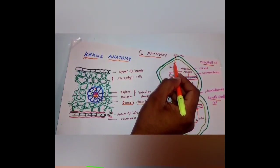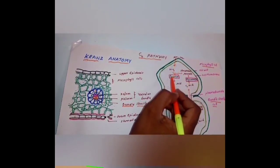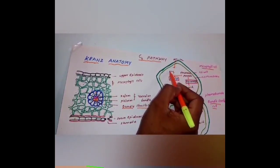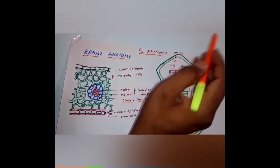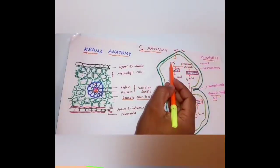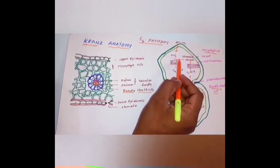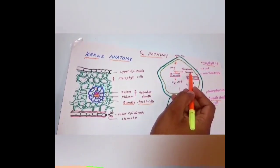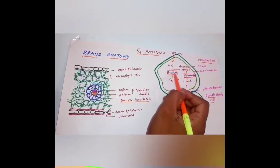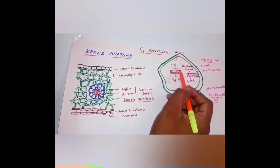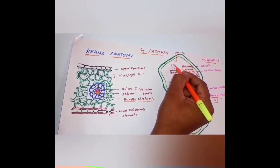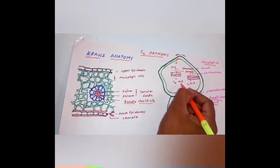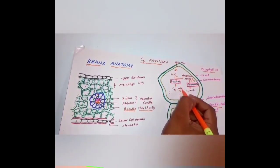Carbon dioxide is converted into bicarbonate ions. These bicarbonate ions are not taken by ribulose-1,5-bisphosphate as in C3 plants; instead, the carbon dioxide is received by phosphoenolpyruvate (PEP). Carbon dioxide in the form of bicarbonate ions reacts with phosphoenolpyruvate — this is called fixation. Phosphoenolpyruvate consists of three carbons and the bicarbonate has one carbon. Together, three plus one = four-carbon compound is formed, that is oxaloacetic acid.